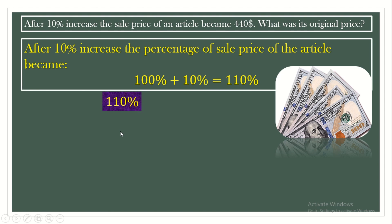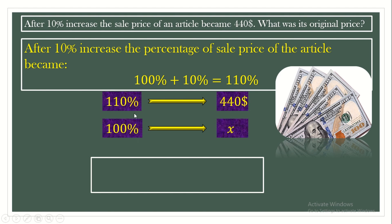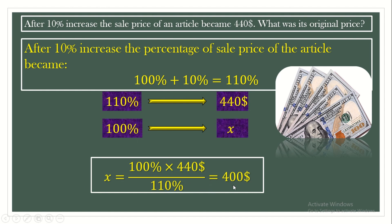We can write: 110% gives us $440. What about the original price, whose percentage is 100%? It gives us X. So X equals 100% times $440, all divided by 110%. We can simplify percent by percent and solve it. We get X equals $400.